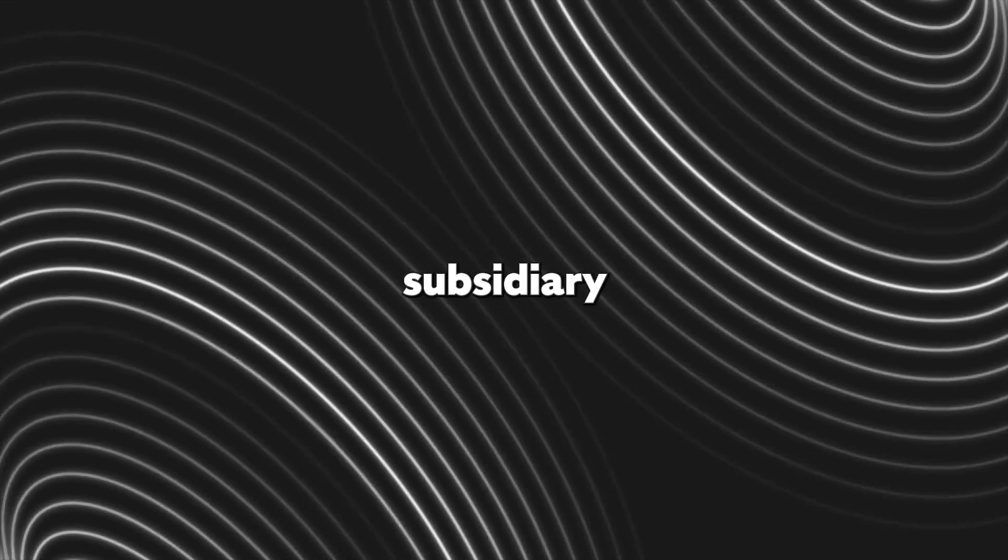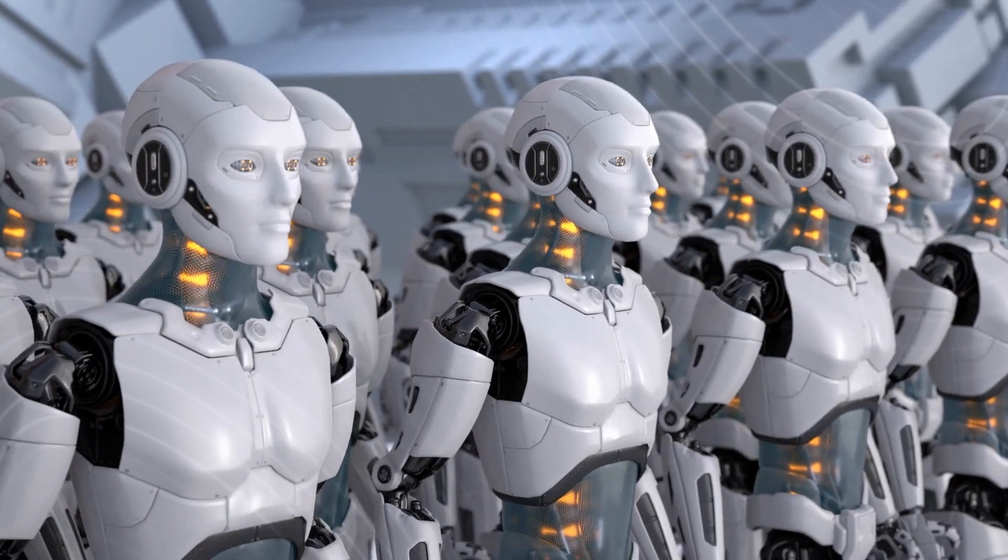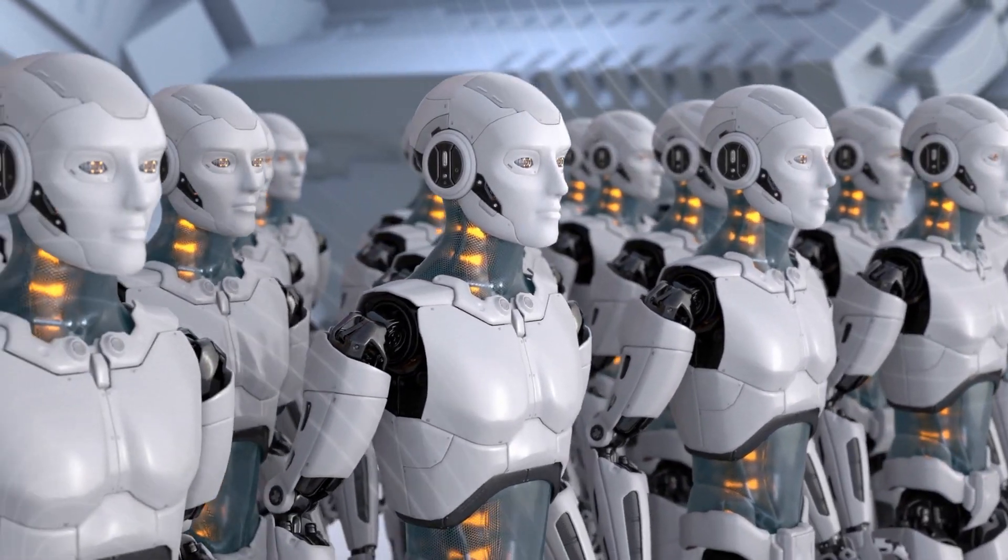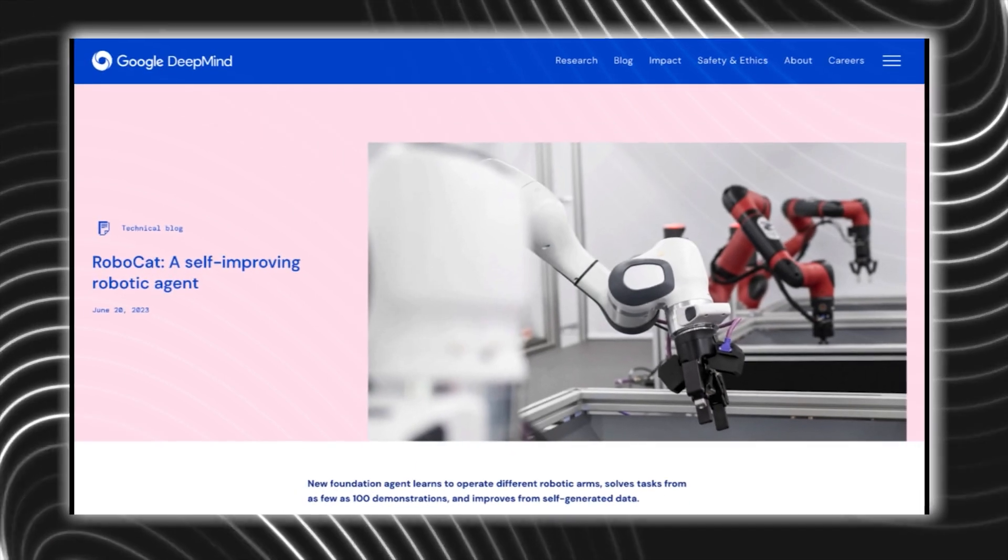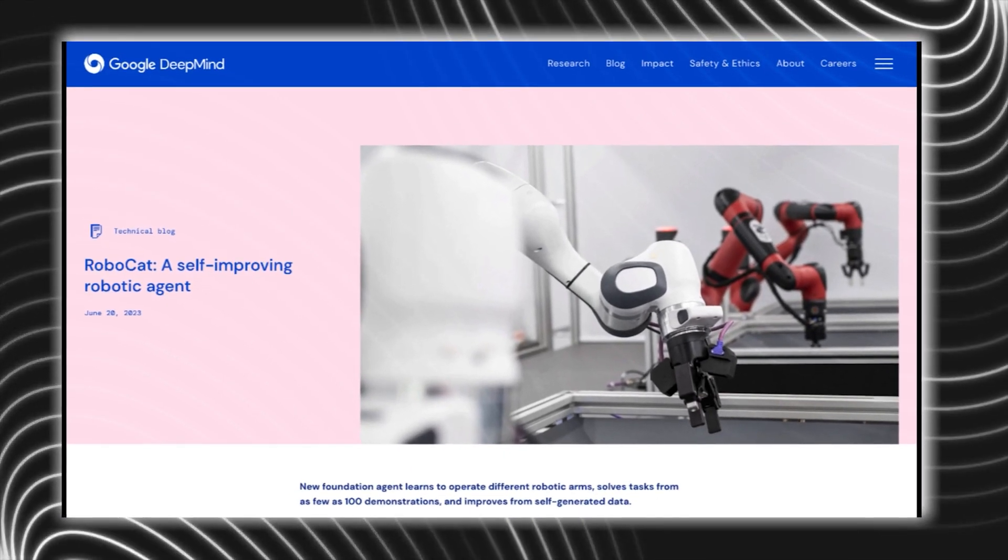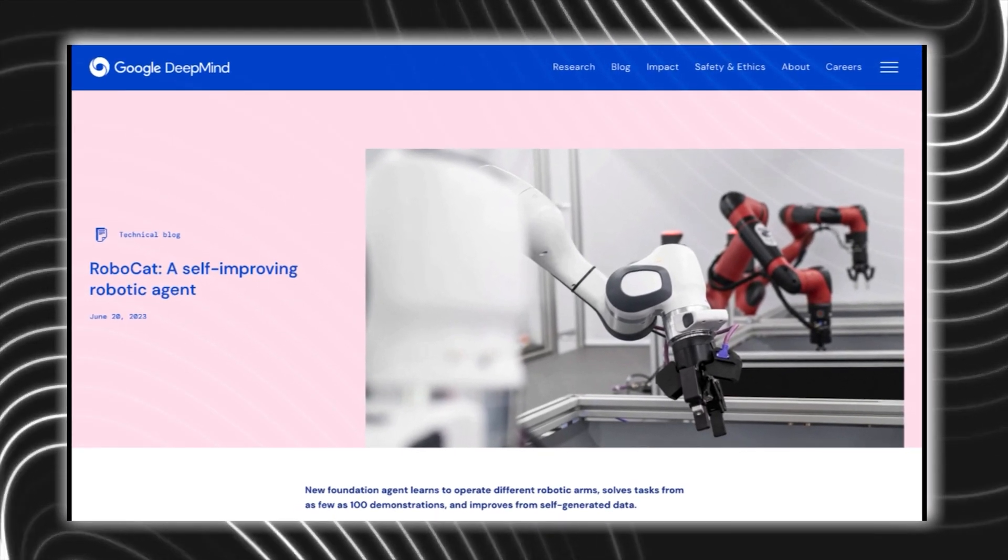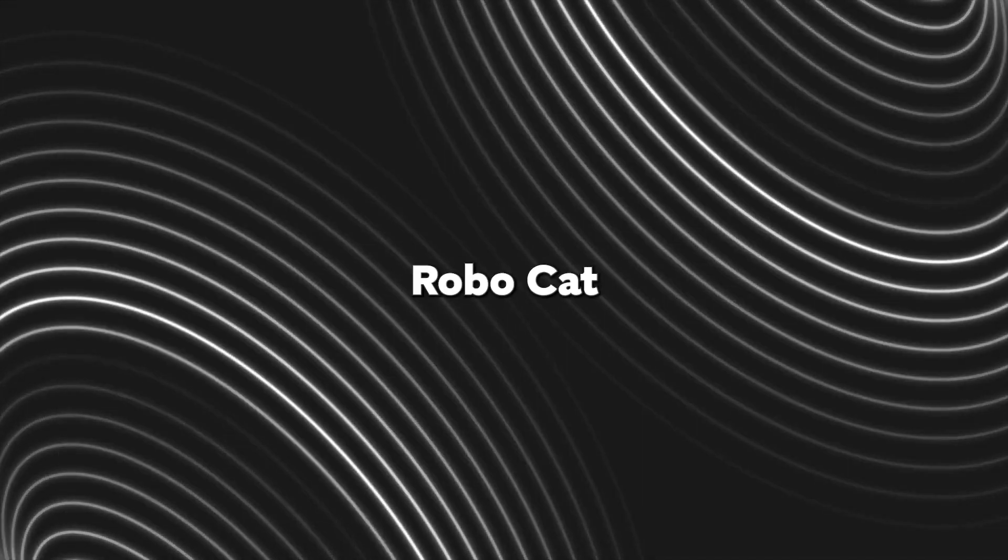But thanks to Google's subsidiary DeepMind, we're getting one step closer to having general-purpose robots. On June 20, 2023, DeepMind published a paper talking about its latest invention, a self-improving AI agent for robotics known as RoboCat.